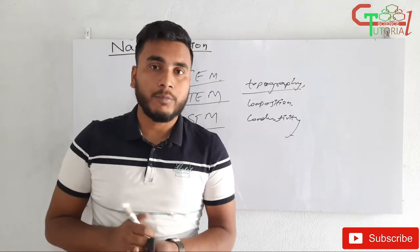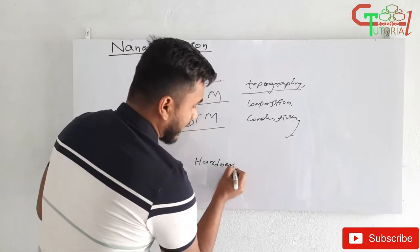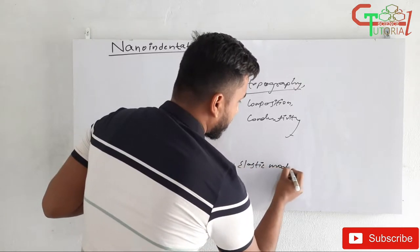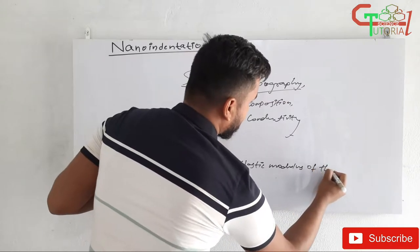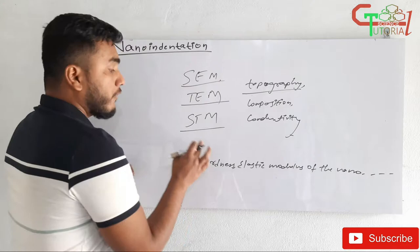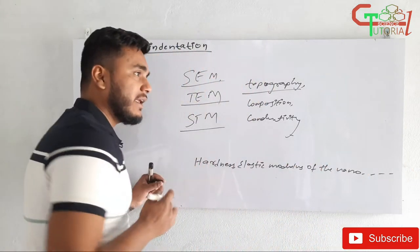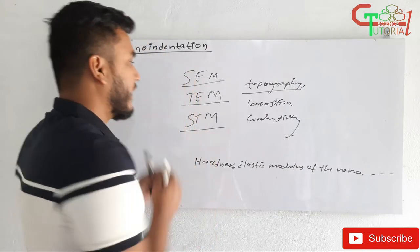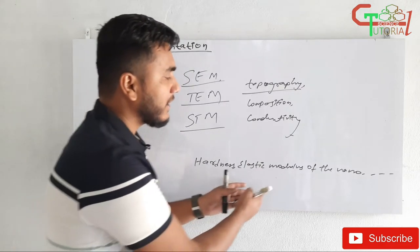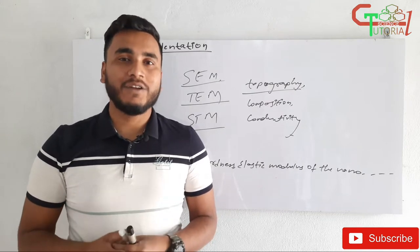But what about other properties like hardness and elastic modulus of the nanomaterials? For measuring these types of properties, a new method had to be invented. That new method is nano indentation. By using nano indentation we can know properties like hardness and elastic modulus of nanomaterials. So without wasting any time, let's start the video.